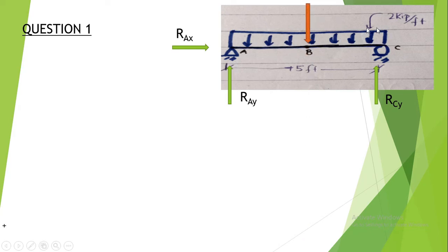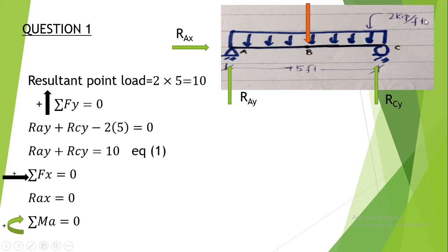To convert this UDL rectangle into a point load, we multiply the span length by the intensity of loading. The resultant point load equals intensity multiplied by span length: 2 multiplied by 5 gives 10 kips. After determining this, it becomes simply a case of a point load acting on a simply supported beam.